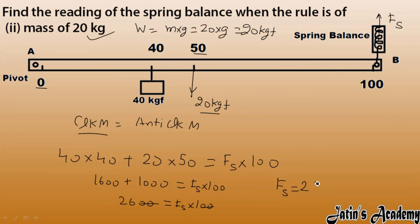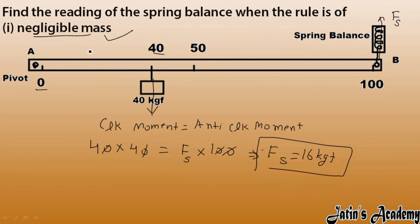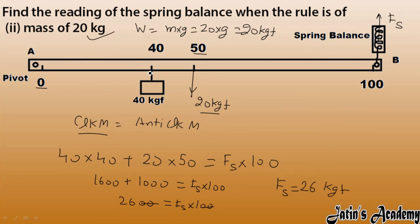To recap: in the first case, when the rule has negligible mass, applying clockwise equals anticlockwise moment gave a spring force of 16 kgf. In the second case, considering the effect of both the 40 kgf load and the 20 kgf rule weight, we got a spring force of 26 kgf.